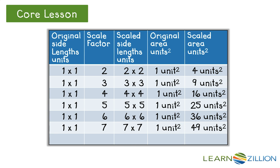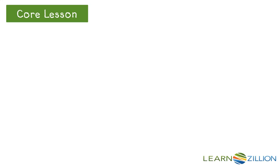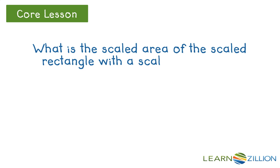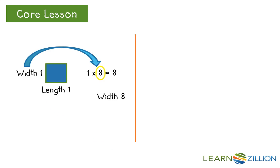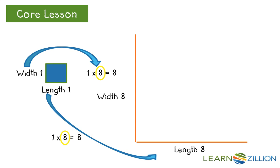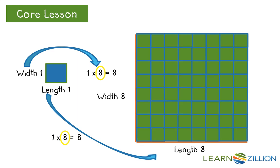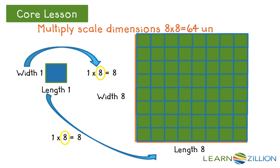Let's generate a scale drawing with a scale factor of 8 on the same original 1 by 1 rectangle. Can you fill in the table with the scaled dimensions and scaled area? The original drawing has dimensions of 1 unit by 1 unit for length and width. When we multiply by a scale factor of 8, the scaled drawing has dimensions of 8 by 8 units. You can see by the units in the scaled drawing that the area is now 64 square units. The 64 is generated by multiplying the new scaled dimensions of 8 times 8. Multiply the length and width of the scaled dimensions for the scaled area of 64 square units.